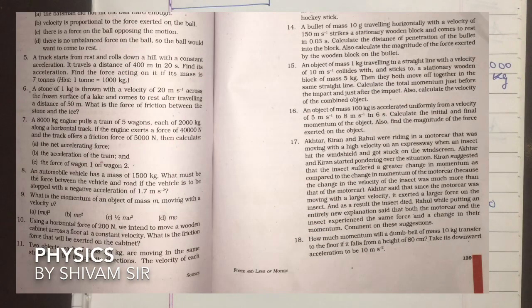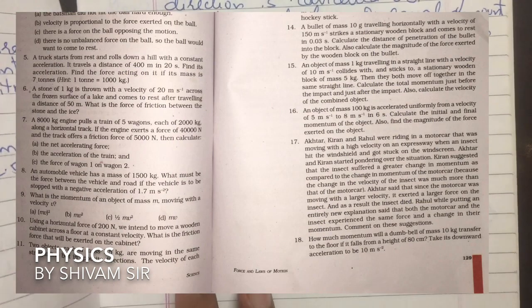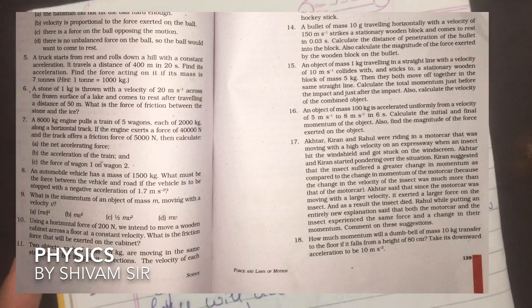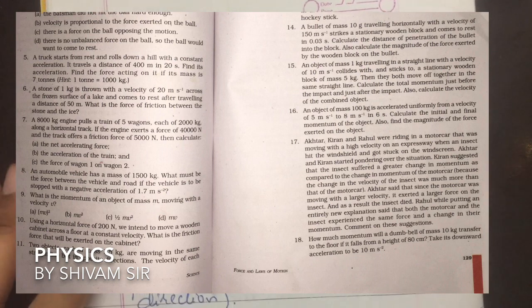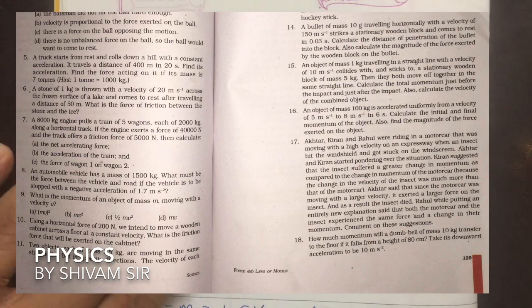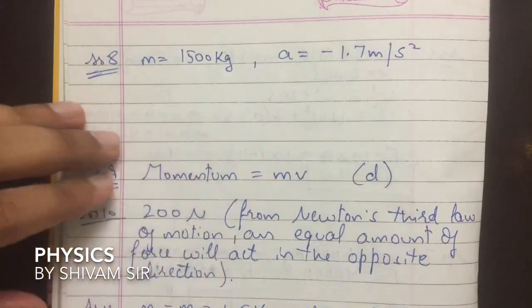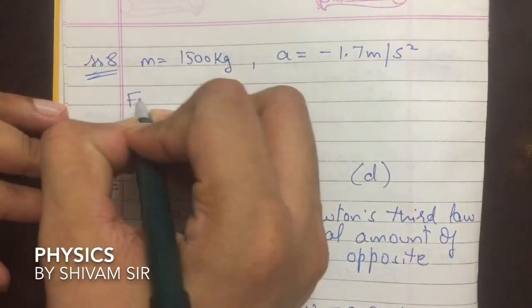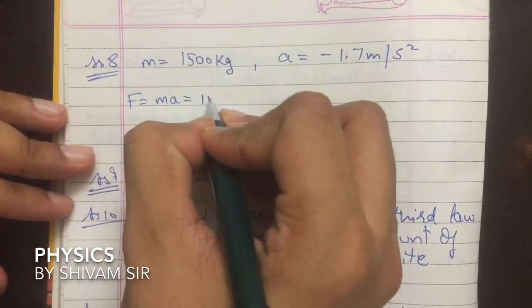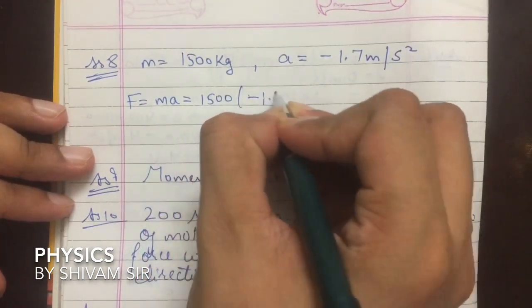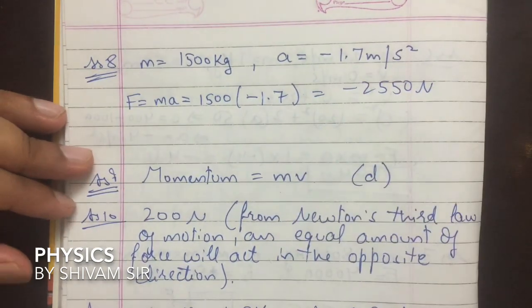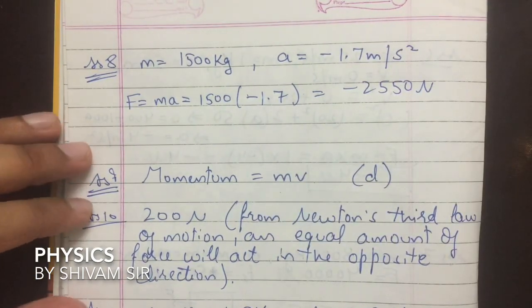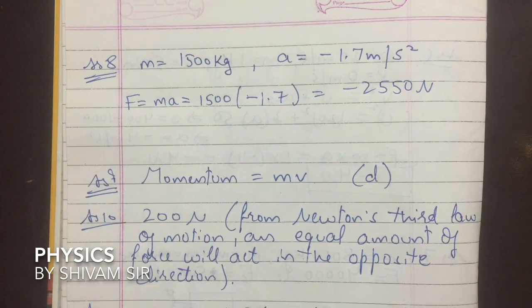Next part: An automobile of mass 1500 kg is to be stopped with a negative acceleration of 1.7 m/s². What must be the force between the vehicle and the road? F = ma = 1500 × (-1.7) = -2550 N. Force is equal to -2550 newton.